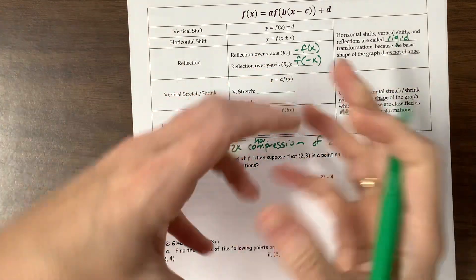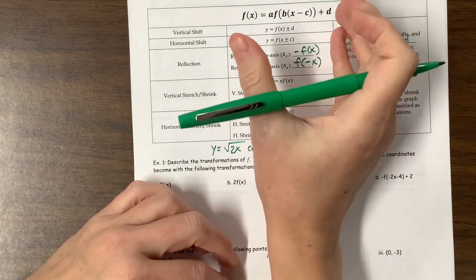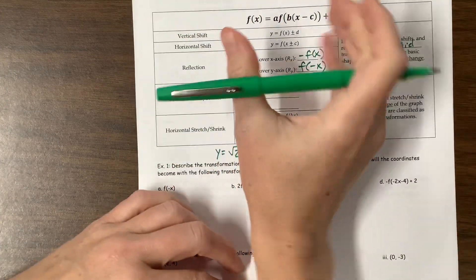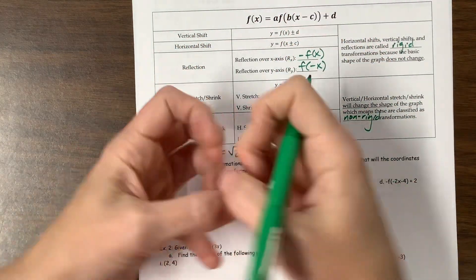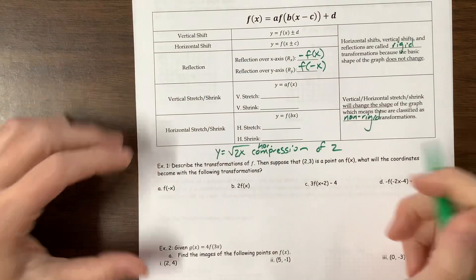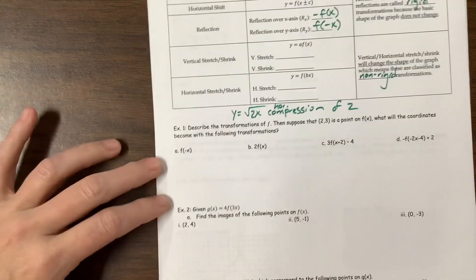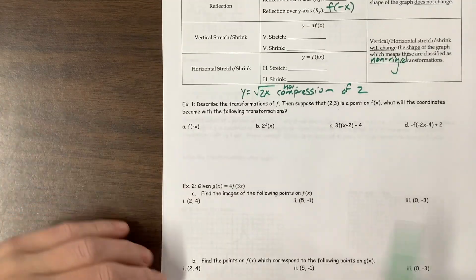Okay, the next one, a vertical stretch or vertical shrink is based on this a value. The bigger a is, the more it gets stretched. So the more it gets pulled apart. And then b kind of does the opposite. The bigger b is, the more it got compressed. So I like to think in a way, I like to describe it in a way that makes sense.